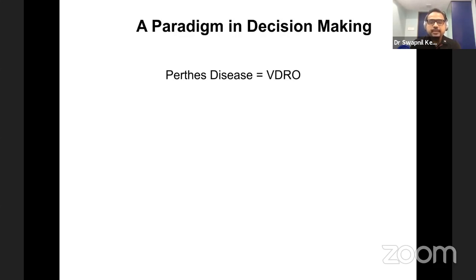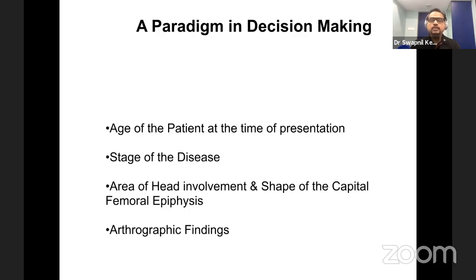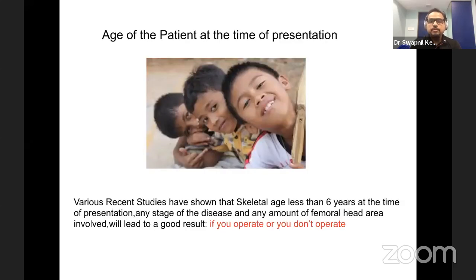Historically, it has been believed that treatment of Perthes is to do a varus derotation osteotomy — the moment you see a Perthes you contain it. However, the paradigm has changed. We now believe there are four very important factors: age of the patient at the time of presentation, stage of the disease, area of the head involved, and shape of the capital femoral epiphysis. Arthrography findings are also extremely important decision-making parameters. A skeletal age of less than six years has been shown in literature that any amount of severe head involvement will lead to a good result, even if you operate or don't.